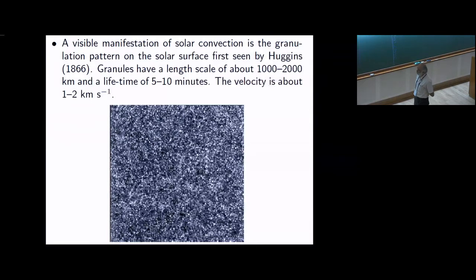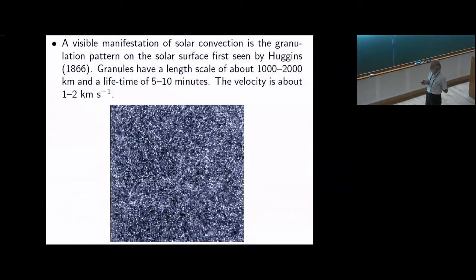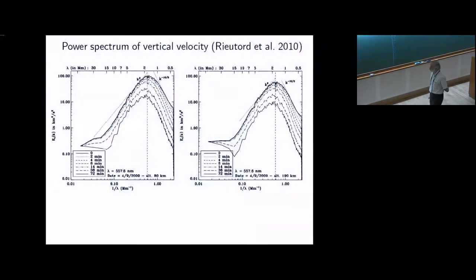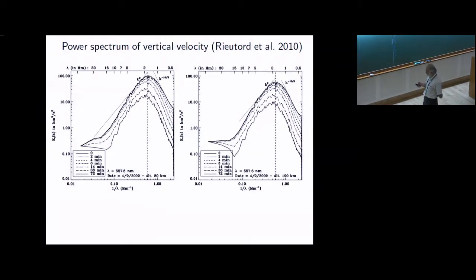You can study this using a Doppler shift — you can actually find that material is coming up and going down, and you can even make movies of it. This is the power spectrum of the vertical velocity. You can see that there is a peak around 1 to 2 megameters, and that is the preferred scale of convection.